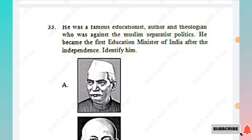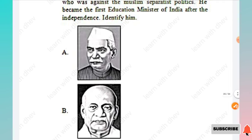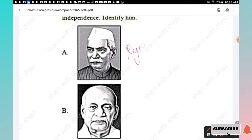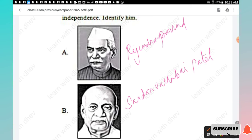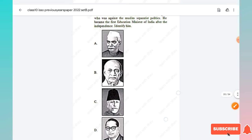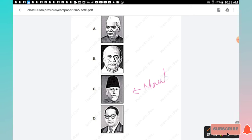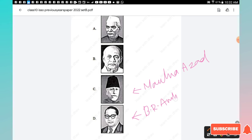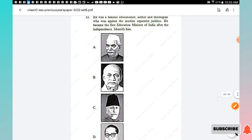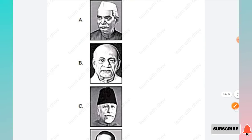Question 33: He was a famous educationist, author, and theologian who was against Muslim separatist politics and became the first Education Minister of India after independence. Identify him — options are Rajendra Prasad, Sardar Vallabhbhai Patel, Maulana Azad, and B.R. Ambedkar. The right answer is Option C, Maulana Azad.